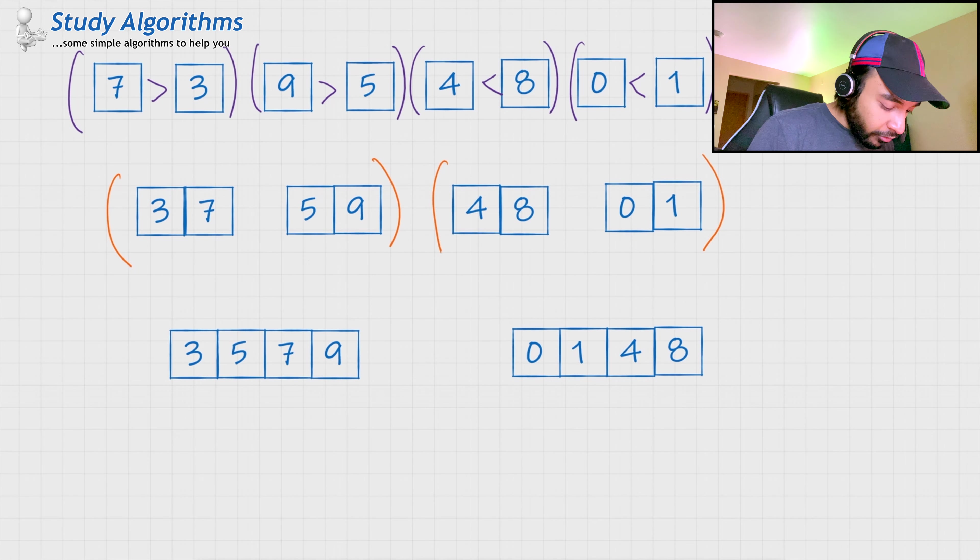So, when I try to merge them, I would see 3 and 0. Since, 0 is smaller, I would be having 0 over here. My pointer moves ahead. I see 1 and 3. Since, 1 is smaller, I copy 1 and move a pointer ahead. I see 3 and 4. Since, 3 is smaller, I keep 3 over here and move a pointer ahead. I see 5 and 4. Since, 4 is smaller, I copy 5.